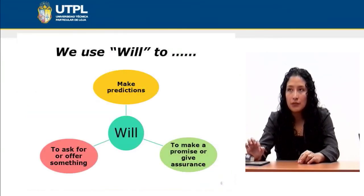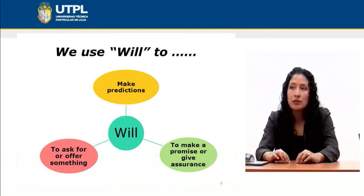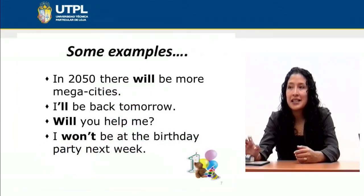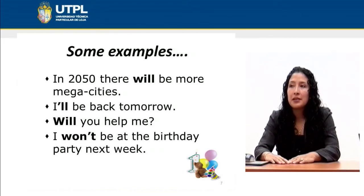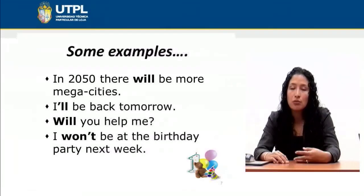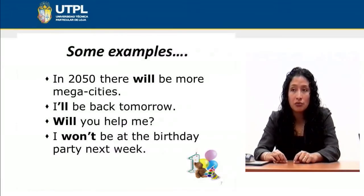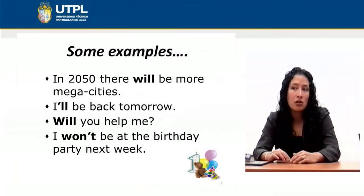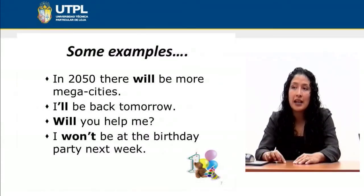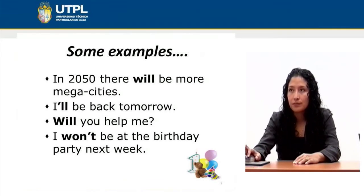When do we use 'will'? We can use 'will' to make predictions, to ask for or offer something, or to make a promise or give assurance. For example: 'In 2050 there will be more mega cities' — this is a prediction. 'I'll be back tomorrow' — assurance. 'Will you help me?' — a question. The negative of 'will' is 'won't': 'I won't be at the party next week,' maybe because you are going to travel or have a different future plan.